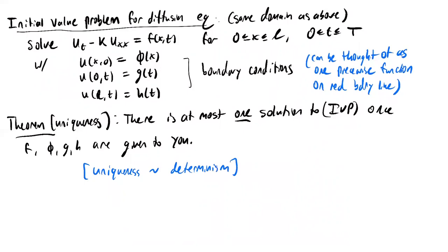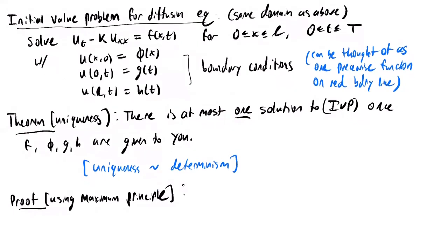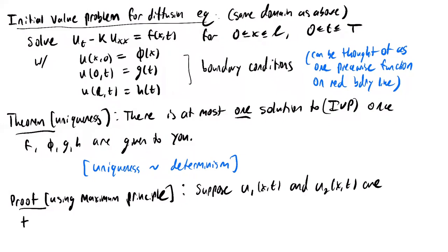We're going to prove uniqueness using the maximum principle. Let's move into the proof. This is a very common argument in the study of partial differential equations. The idea is: what does it mean for the IVP to have a unique solution? It means that if there are two solutions, then they have to be the same function. So suppose u1 of xt and u2 of xt are two functions which are solutions to the same initial value problem.